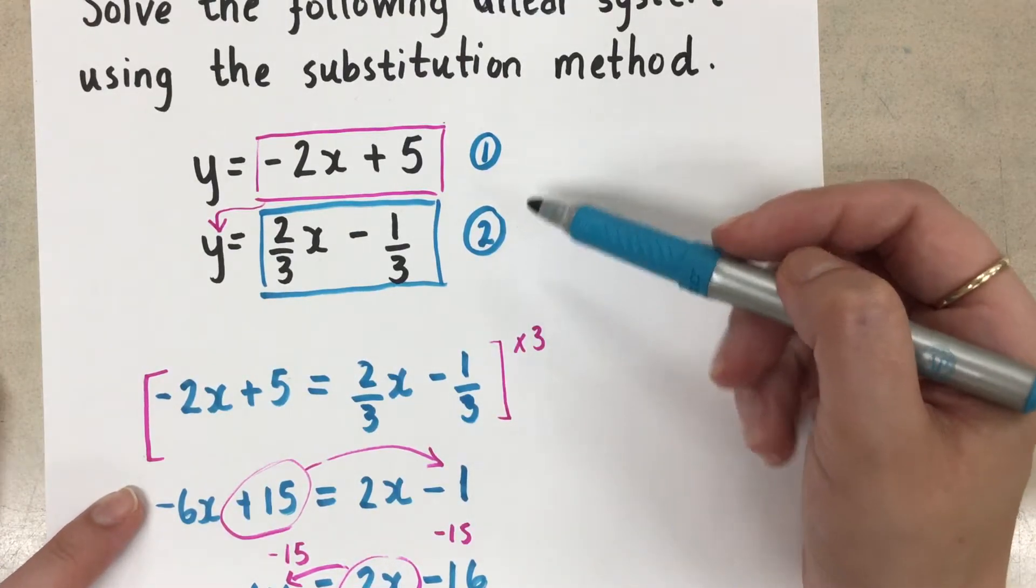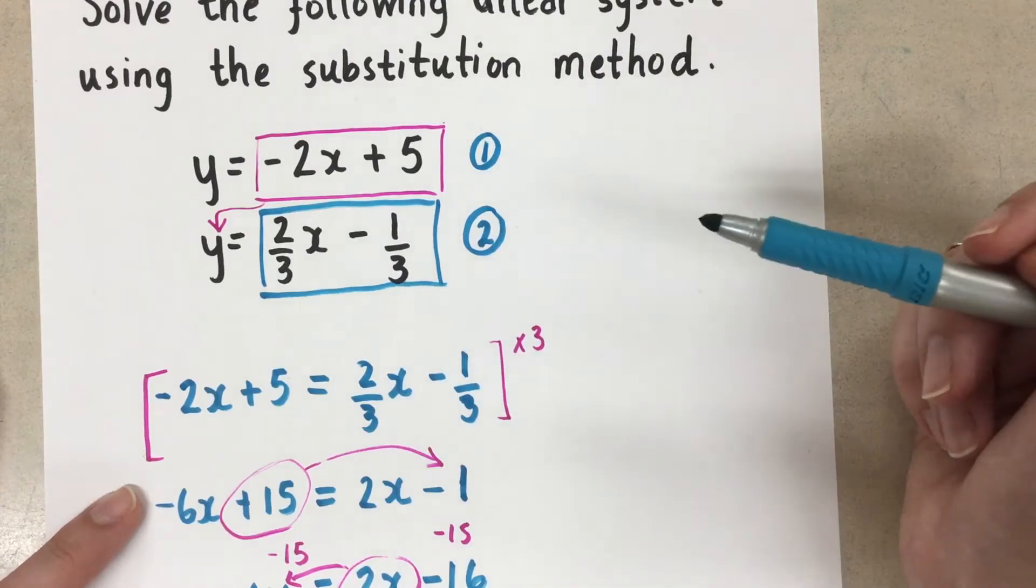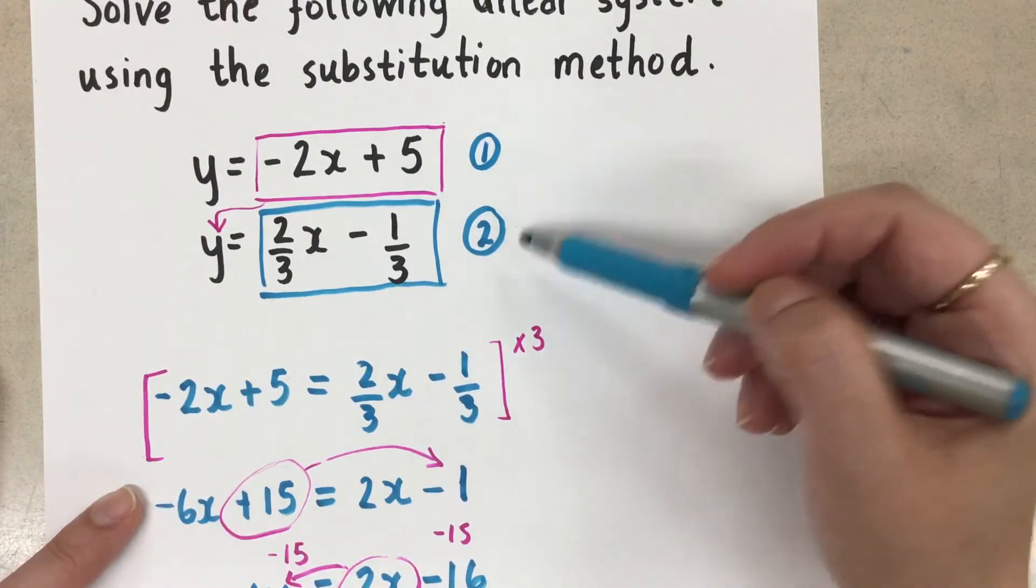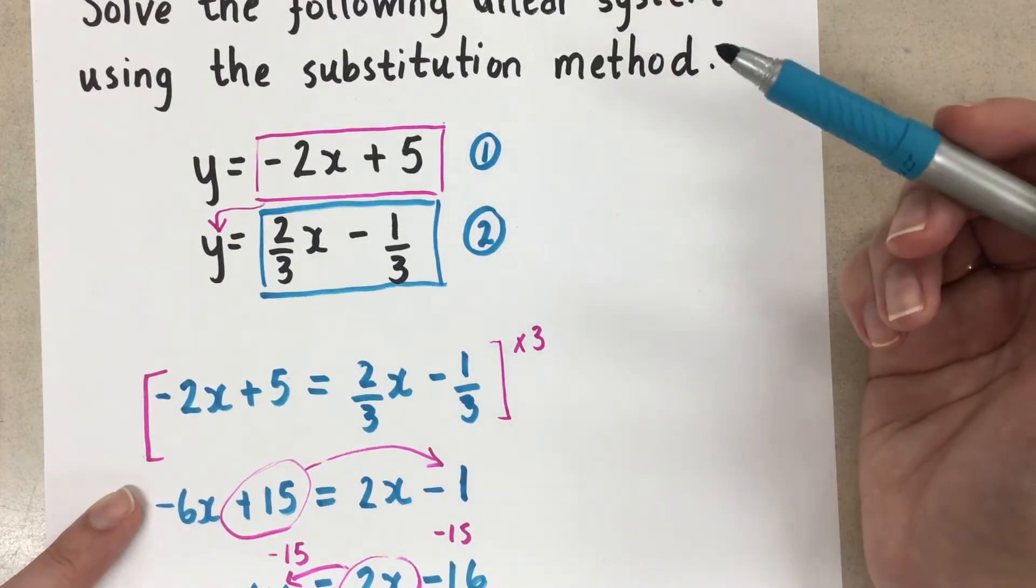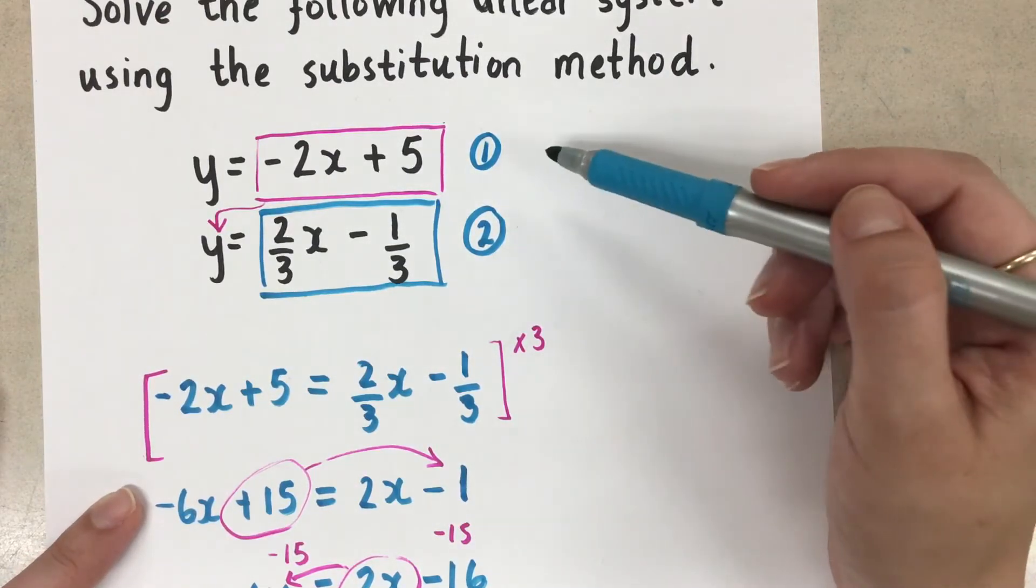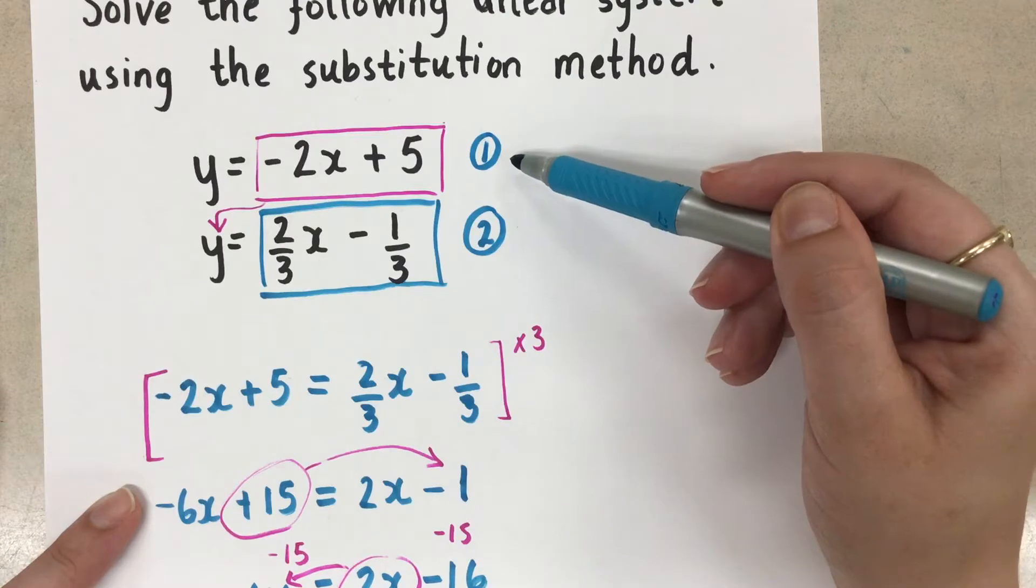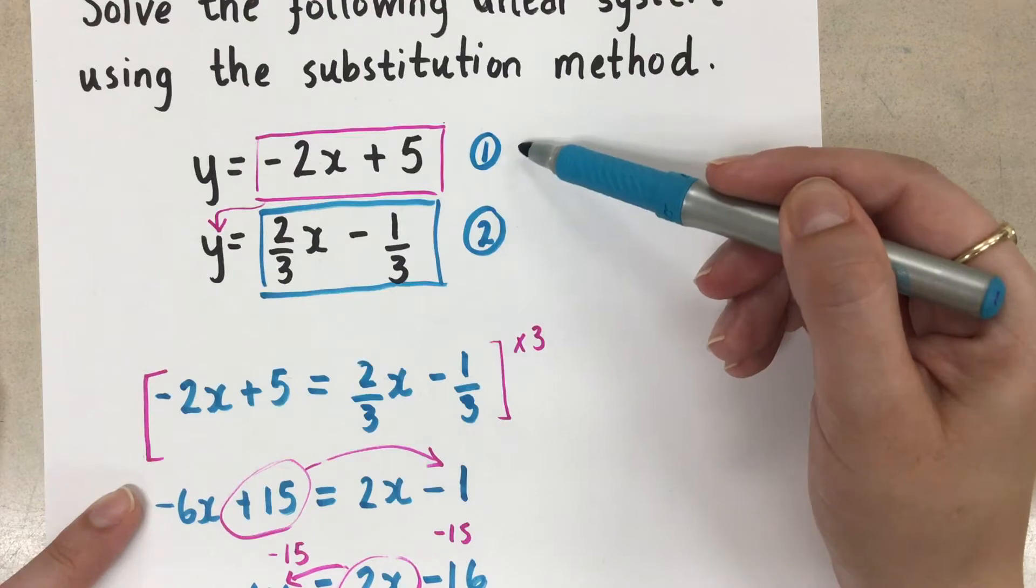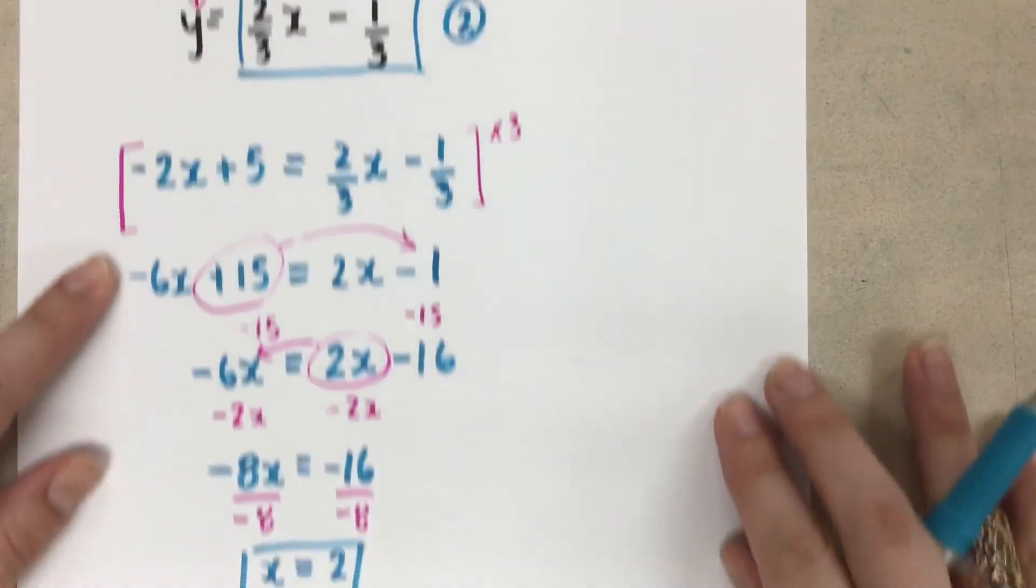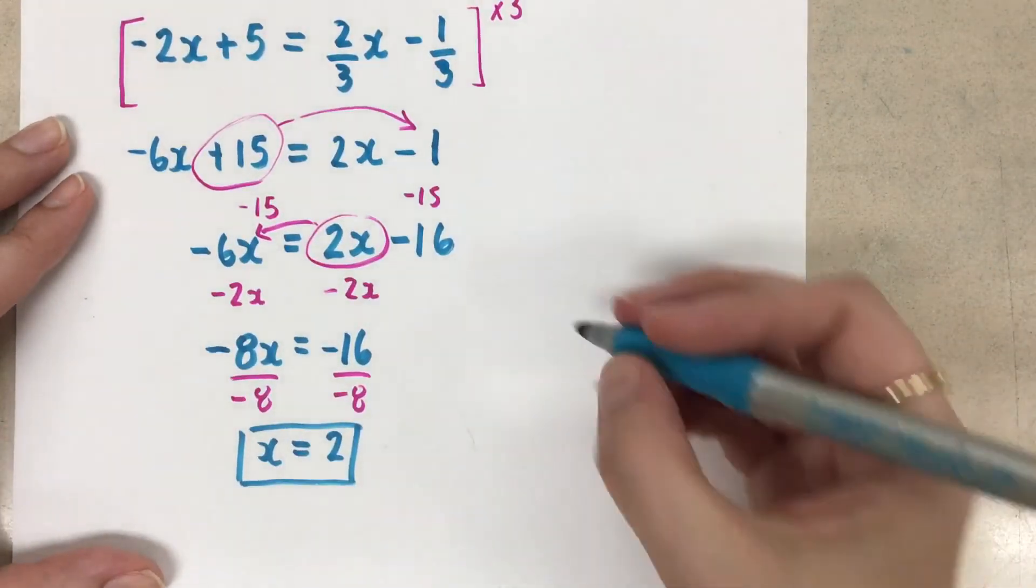It doesn't matter which one we use, because this point, if it is a point of intersection, should satisfy both equations in the same way. So I always suggest we choose the one that looks the easiest. And I think that easiest one is equation number one without the fractions on it. So I'm going to sub in that x equals 2 into equation one.